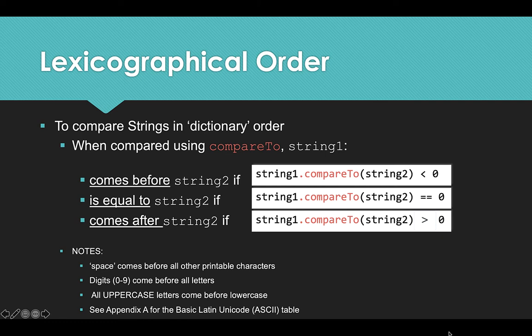So we can compare the order that strings should come in. We can compare that a string one might come before string two, that they're equal to each other, or that string one should come after string two in lexicographical order. But what is this lexicographical order? I've heard of alphabetical order. What is this big word?